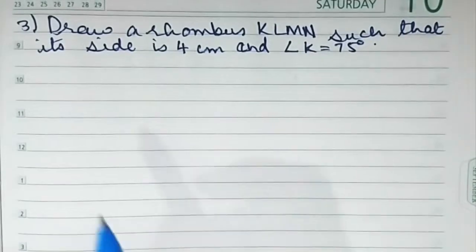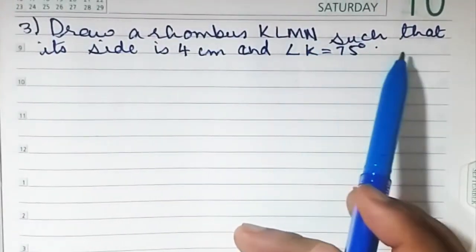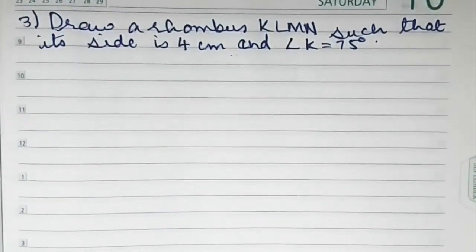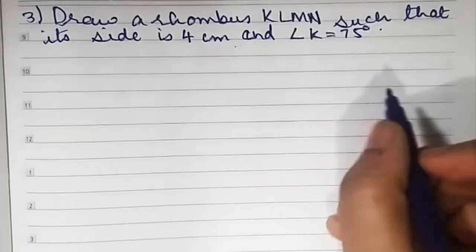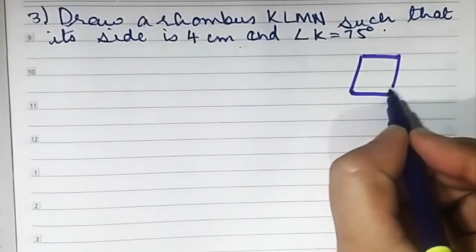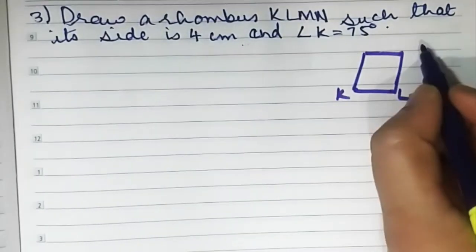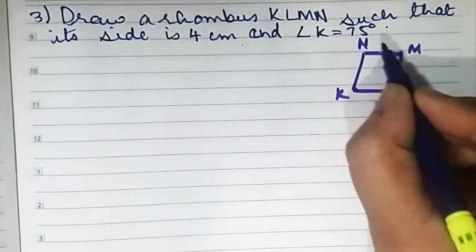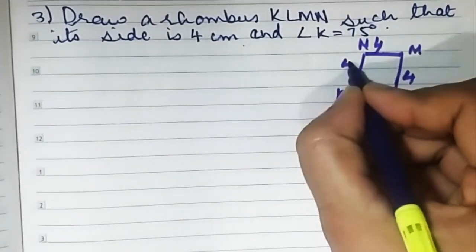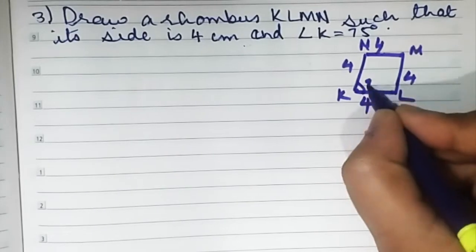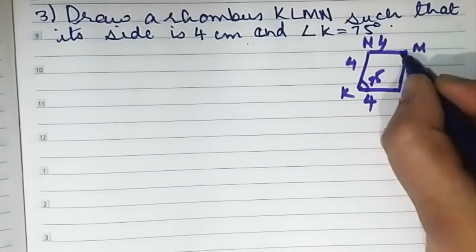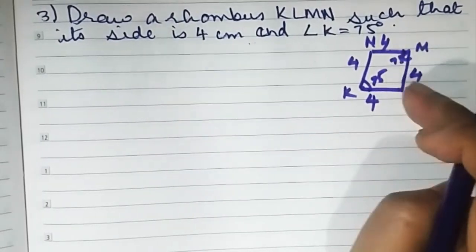Number three now. Draw a rhombus KLMN such that its side is 4 centimeters and angle K is 75 degrees. It's a rhombus — K, L, M, N. One side is 4, that means all sides are going to be 4. One angle is 75 degrees. Remember, in a rhombus opposite angles are congruent, so angle K is 75 and angle M is also going to be 75. But we don't know angle L and angle N.